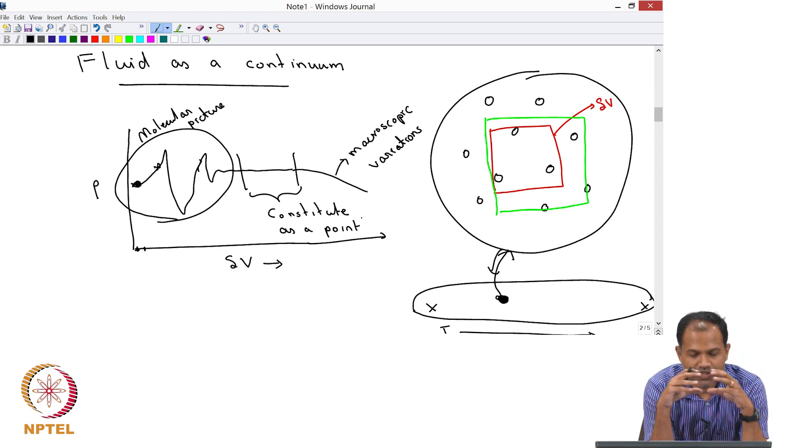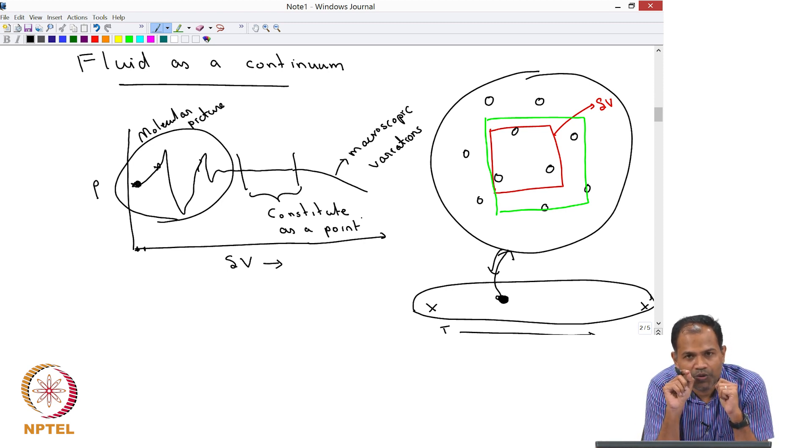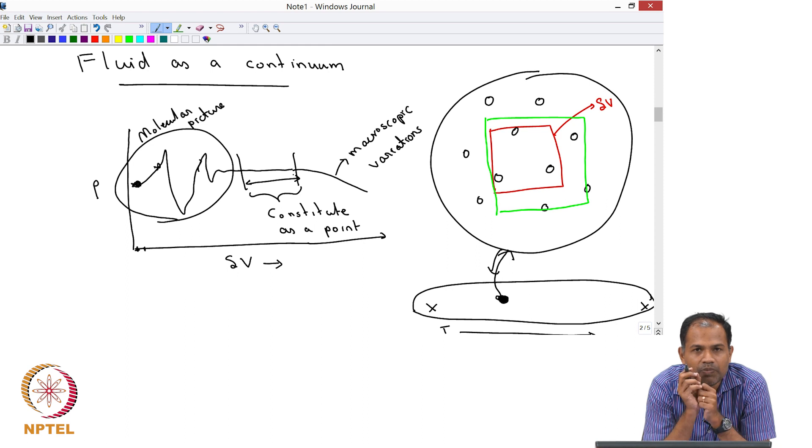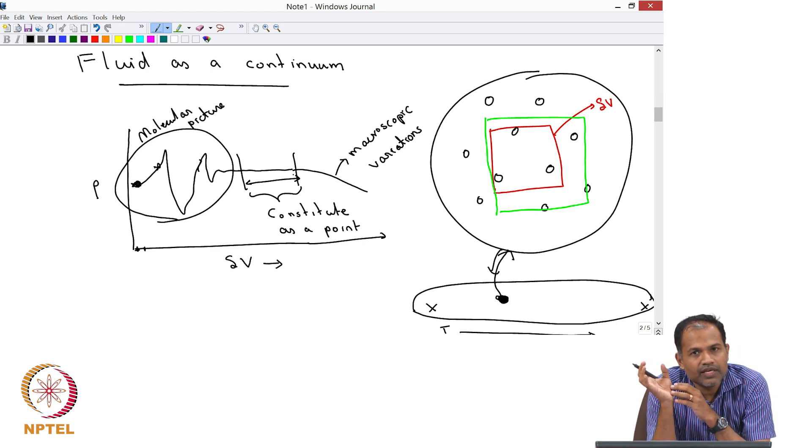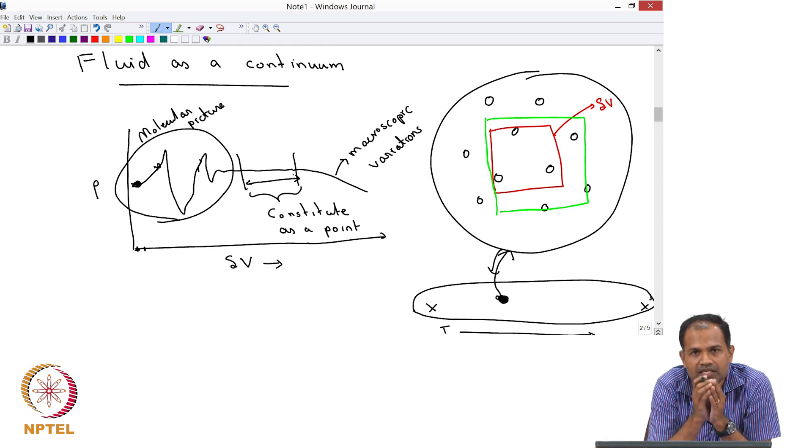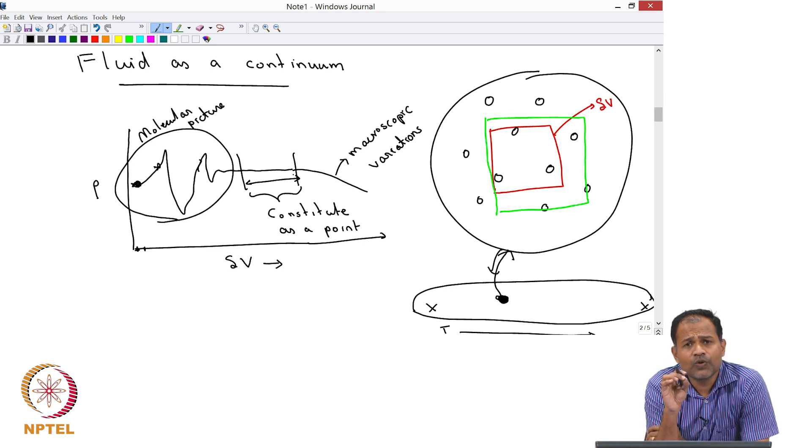In other words, if you have a fluid and you say that you are looking at a particular point in a fluid, that point is really not of zero size. That point is of this length scale such that at that point, I can define a property to be constant. If I increase the volume of that point, then I am going to see macroscopic variations. But if I decrease the volume of that point, then I am going to see molecules. The basic idea of continuum is that the point is defined on a length scale much larger than the molecular length scale, but much smaller than the macroscopic variations. That is the idea of treating fluid as a continuum.